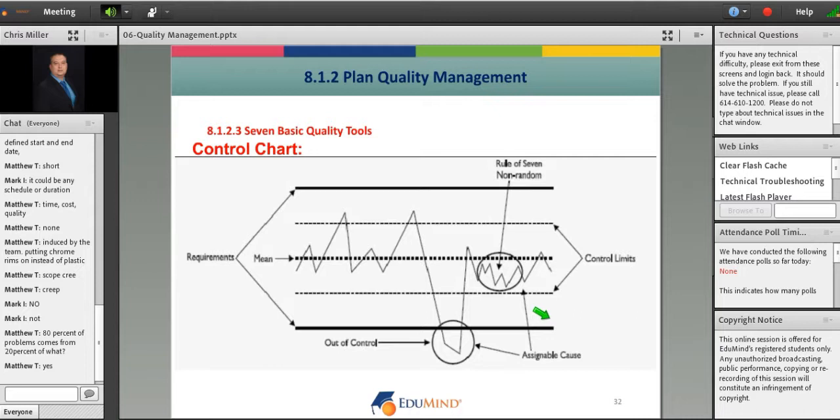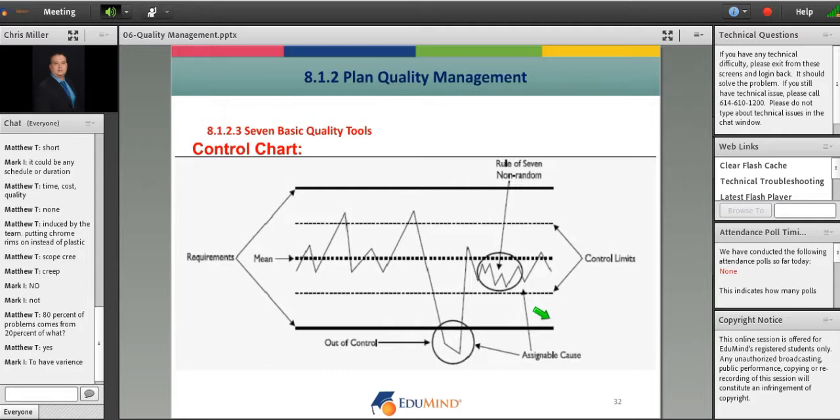Find an assignable cause. Why are the control limits more stringent than the specification limits? Yeah, very well said Mark, very well said.